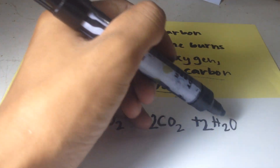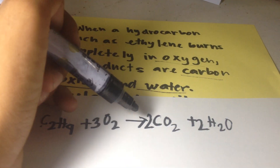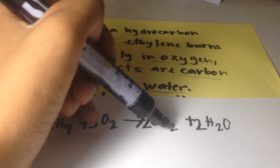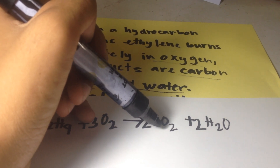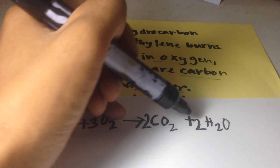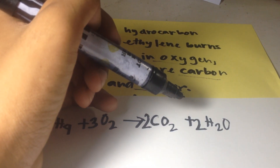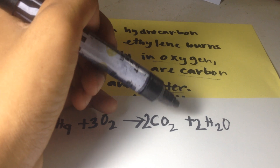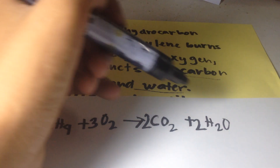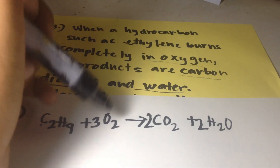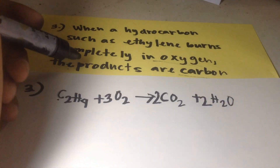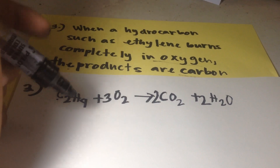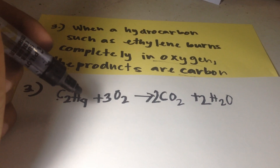From the 2 carbons here, we write a 2 for CO₂. There are 4 hydrogens, so we write coefficient 2 for water — 2 times 2 equals 4. Then 4 plus 2 equals 6, divided by 2 equals 3. So the equation is completely balanced.